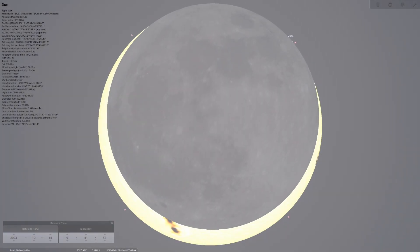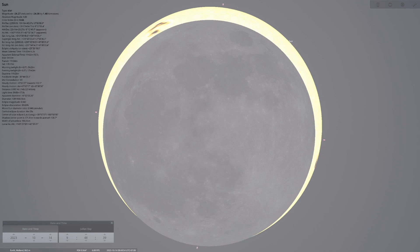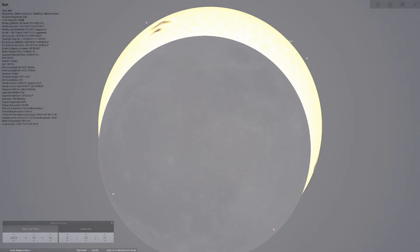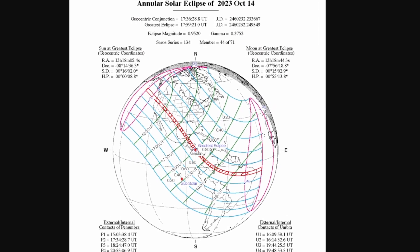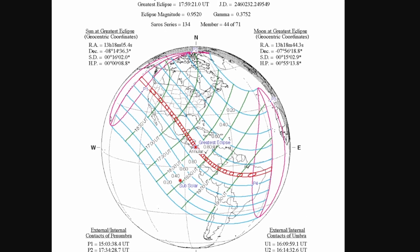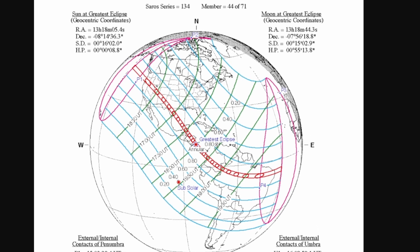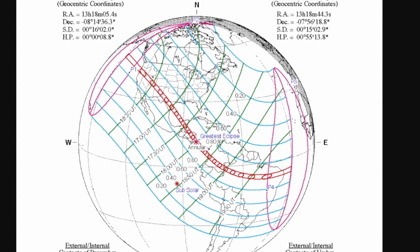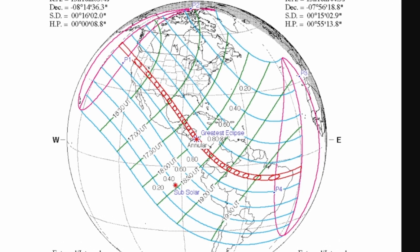Mark your calendar for October the 14th at 8 in the morning Pacific Daylight Time, as the moon covers portions of the sun making a ring of fire solar eclipse. An annular solar eclipse will visit the United States for the first time since May 20th, 2012. If you are inside the path of annularity, you will witness the outline of the sun as a thin ring obscured by the moon — what is known as a ring of fire.